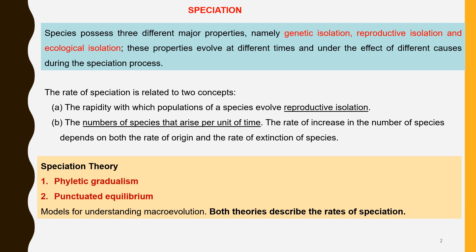Species possess three major properties: genetic isolation, reproductive isolation, and ecological isolation, which have evolved over time. The rate at which speciation occurs depends on how quickly reproductive isolation occurred between individuals and the number of species that arose per unit time. Two theories or models have been proposed to explain the rate of macroevolution: phyletic gradualism and punctuated equilibrium.